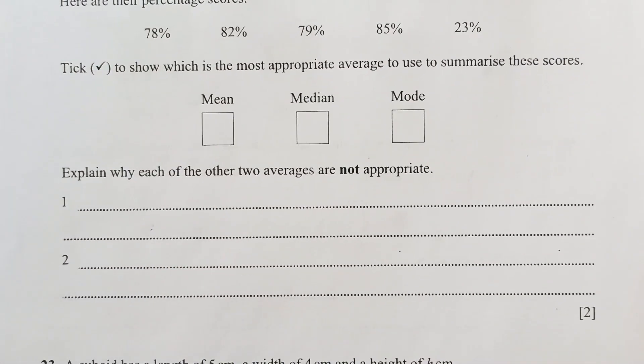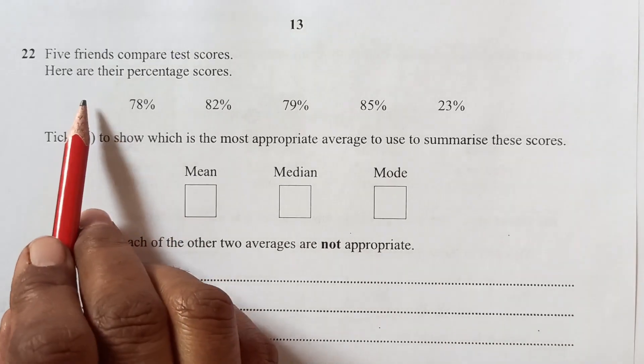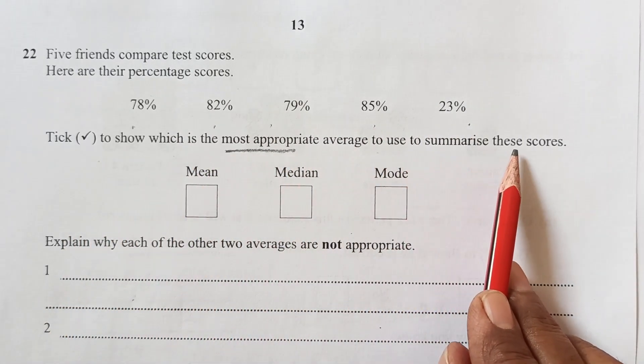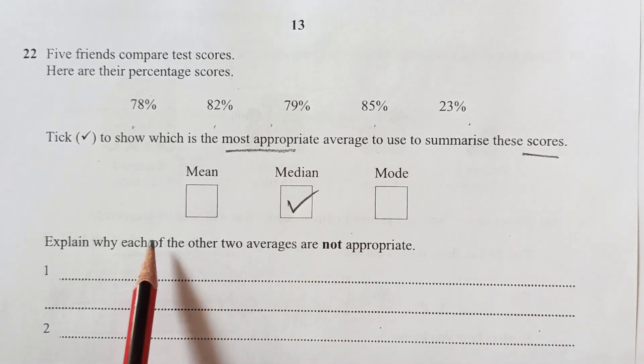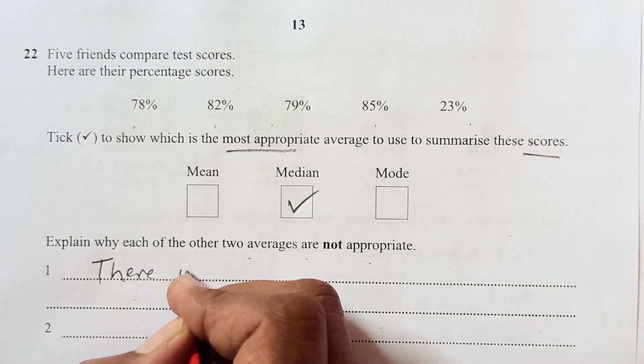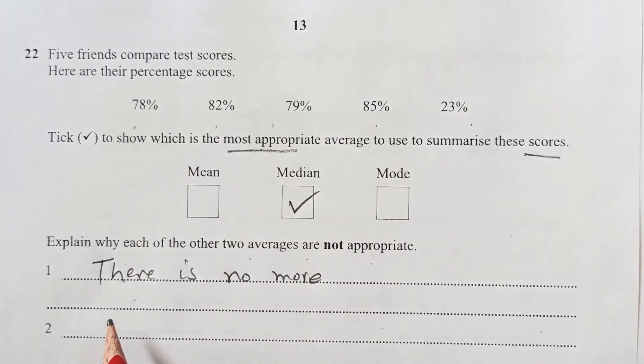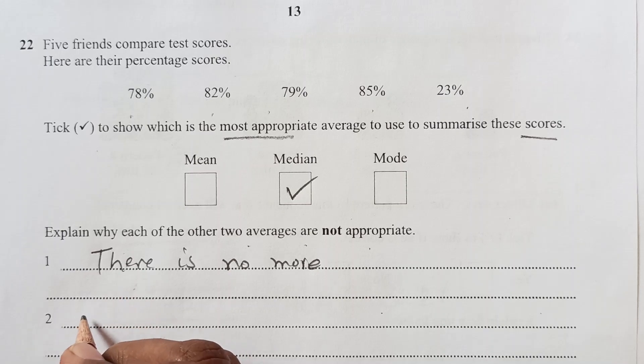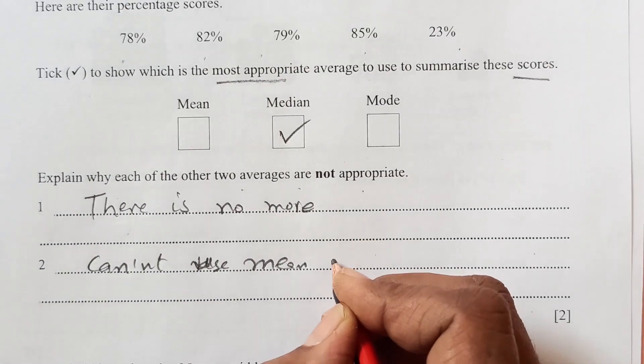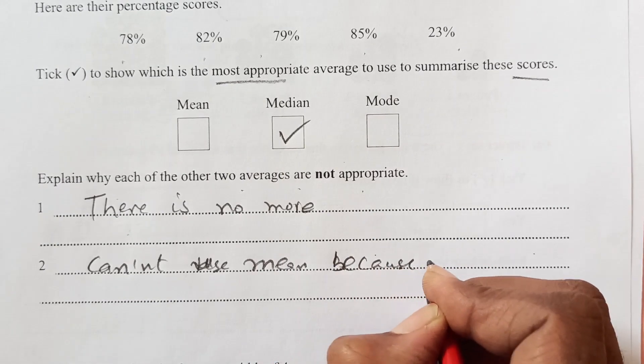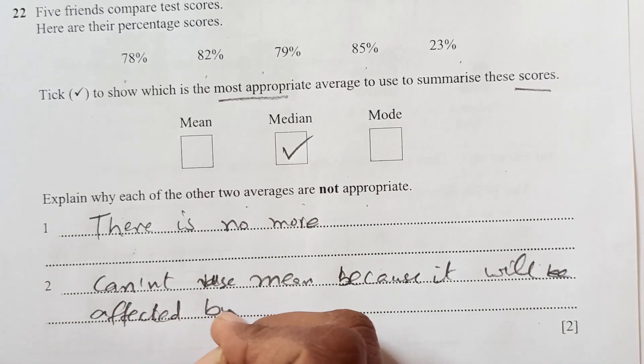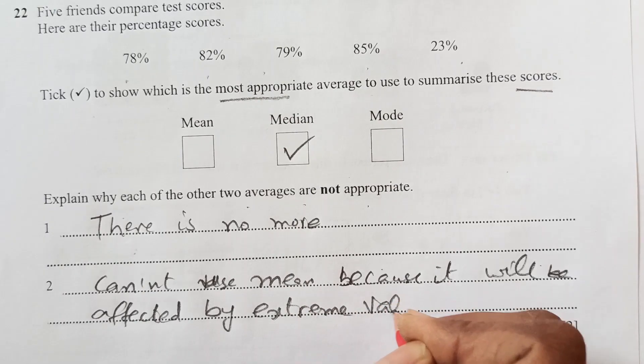Number 22. Here we have 5 friends complete test scores. Here are the percentage scores: 78, 82, 79, 85 and 23. Tick to show which is the most appropriate average to use to summarize these scores. We will have the median because we can't rely upon, that's why the two averages are not appropriate. First thing, we don't have mode. There is no mode because nothing is repeated here. Another thing, we can't rely upon mean because mean is not representative. Can't use mean. Because it will be affected by extreme values.